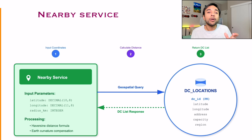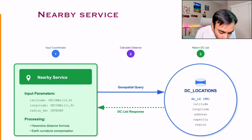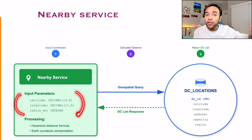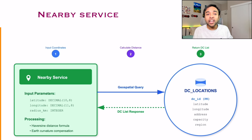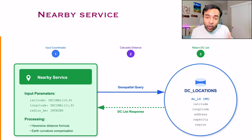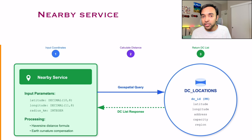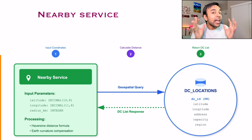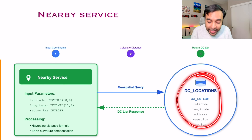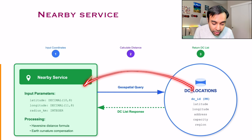The nearby service is responsible to fetch you the list of top distribution centers that are nearest to you. You are going to give your latitude and longitude as input parameters. It will tell you that you are at this particular location, and let's say you have configured to look up in a 5 kilometer radius. You will manage a database that stores the location of each of your distribution centers — storing the latitude and longitude, the address, the capacity and the region. Each distribution center can determine whether it has to serve this user or not. You can try to fetch the top 5 distribution centers.